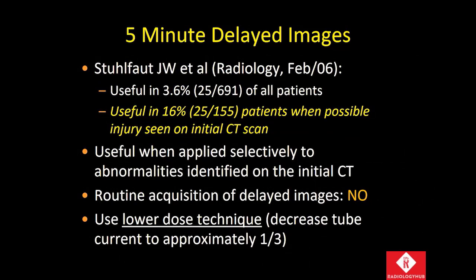The 5-minute delayed images are important not just for evaluation and detection of renal collecting system integrity, but also to identify and characterize sources and areas of bleed in the abdomen. It is recommended that the radiation dose be lowered for the delayed phase — at our institution, we do it by decreasing the tube current to approximately one-third of that used for the portal venous phase. These delayed images are useful in about 16% of all blunt trauma patients in our experience.